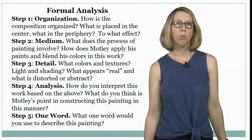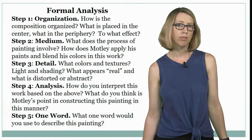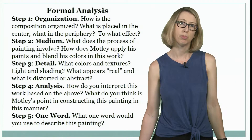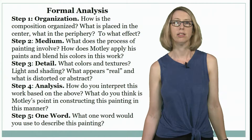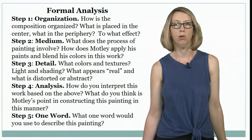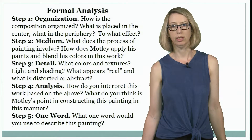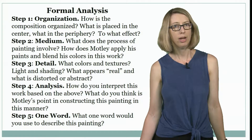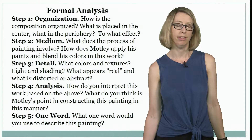Step three, detail: what colors and textures do you see? What use of light and shading? What appears real, what appears distorted, what appears abstract? Why do you think he does this? And then the analysis component: how do you interpret this work based on what you've looked at? What do you think is Motley's point in constructing this painting in this manner? Why did he construct it this way? And then the fifth step is the one-word analysis: what one word would you use to describe this painting?